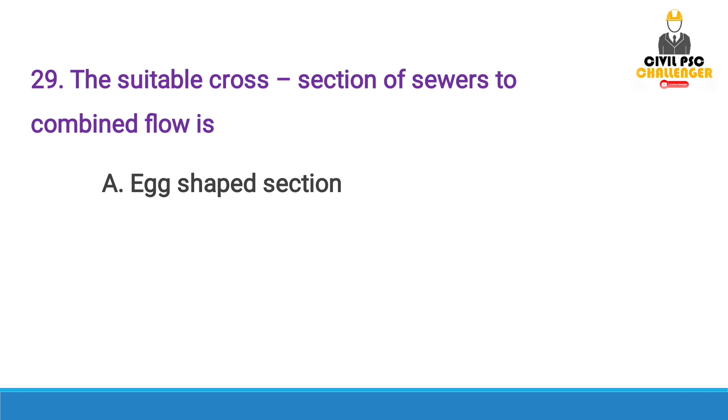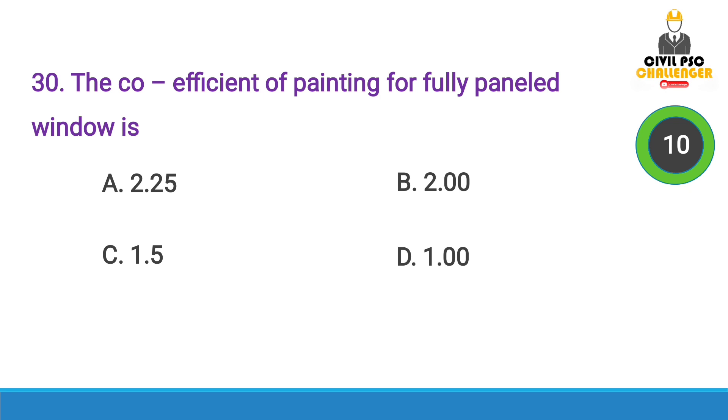Next question: The suitable cross section of sewers for combined flow is — Answer option A, Egg-shaped section.